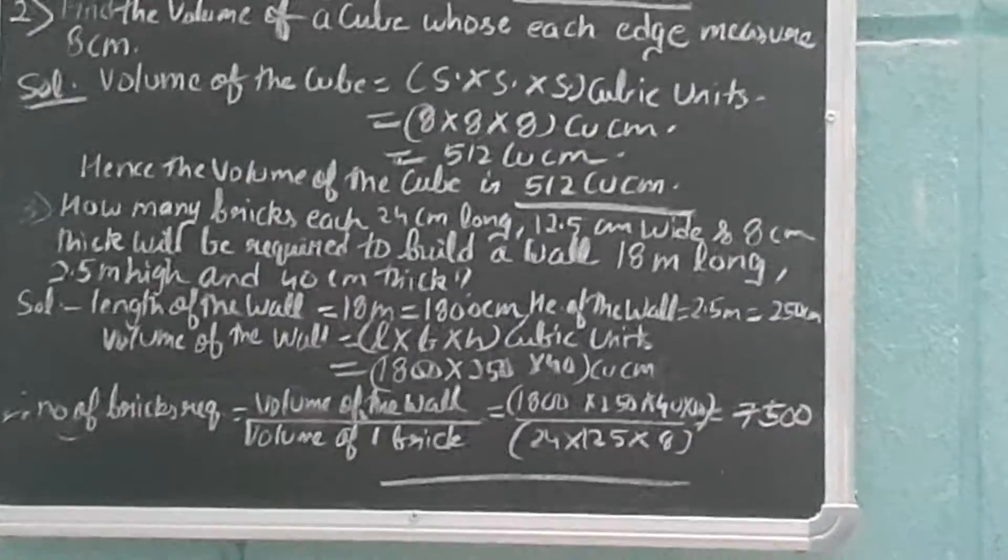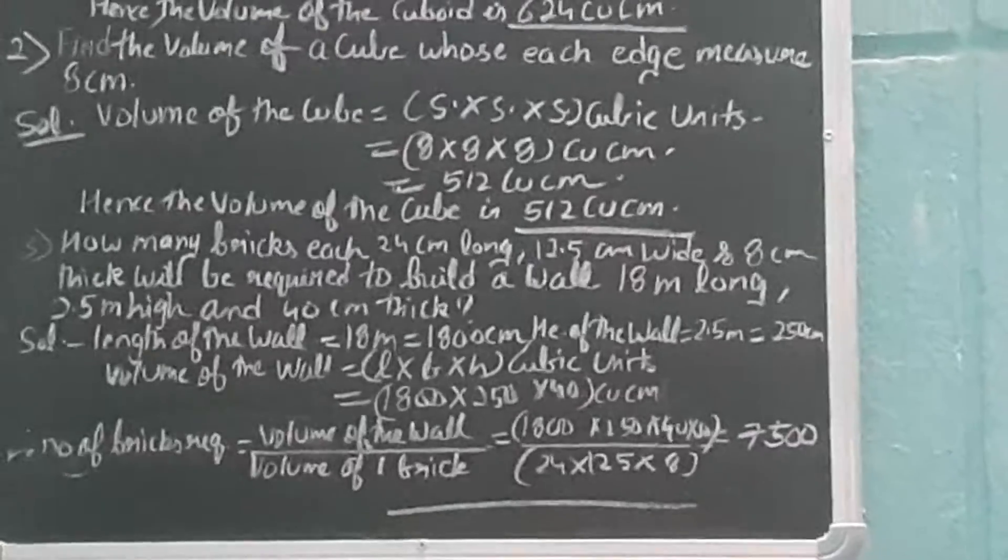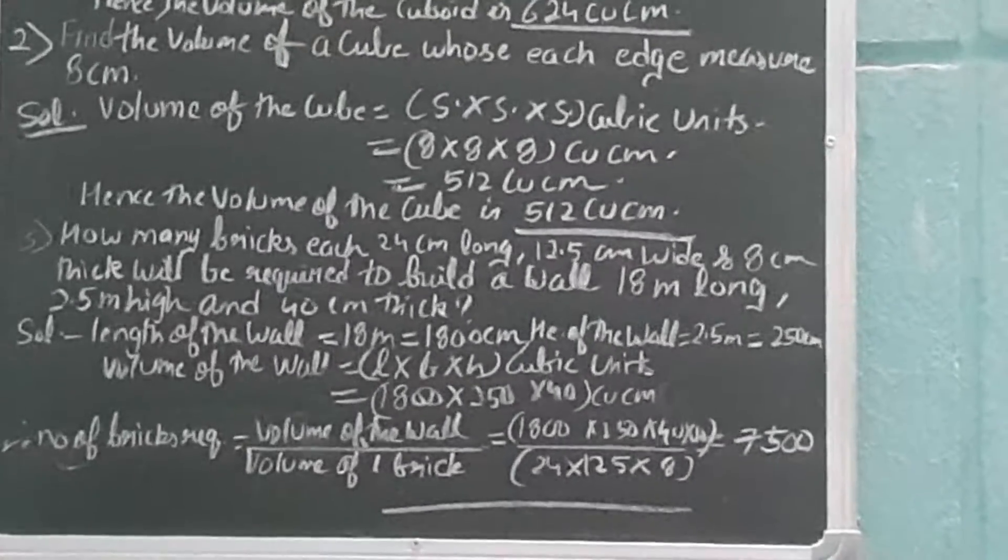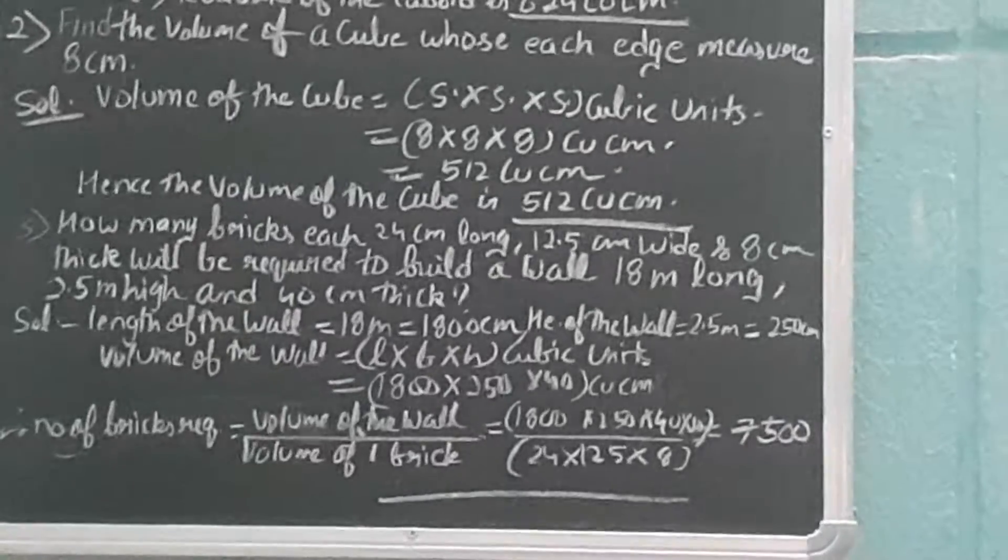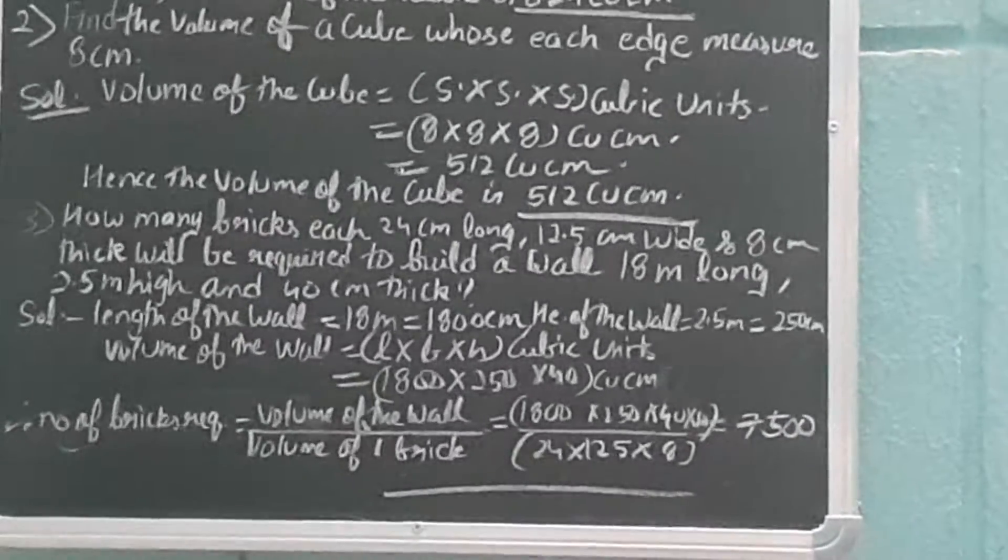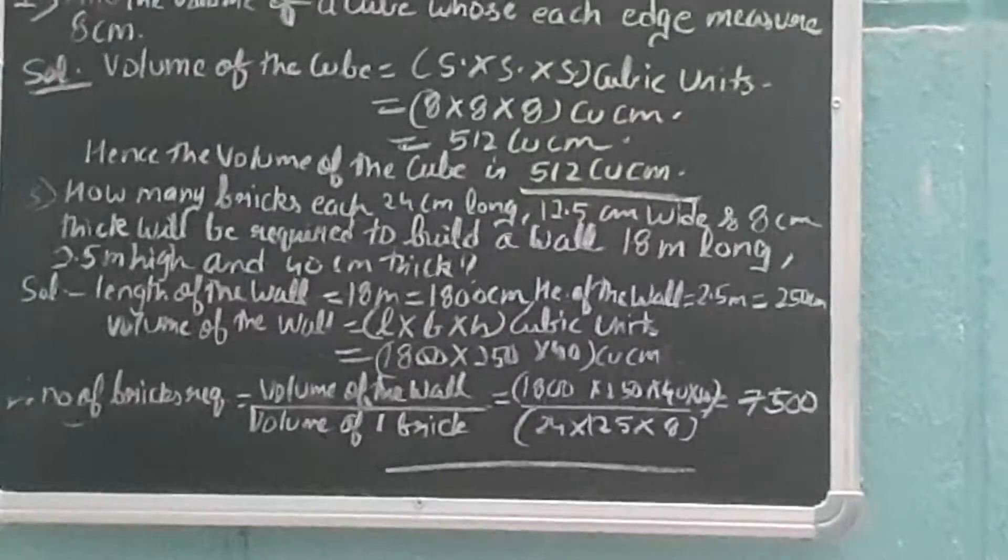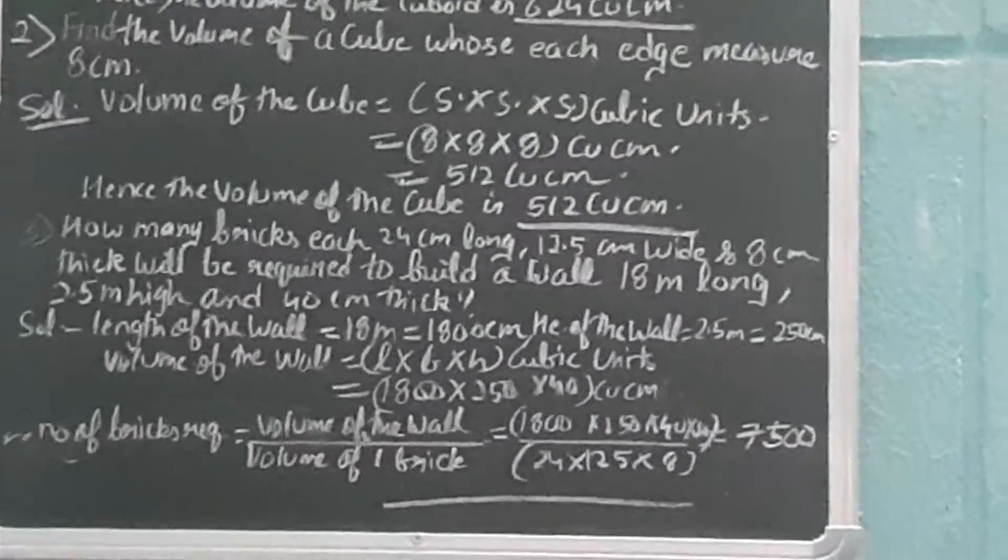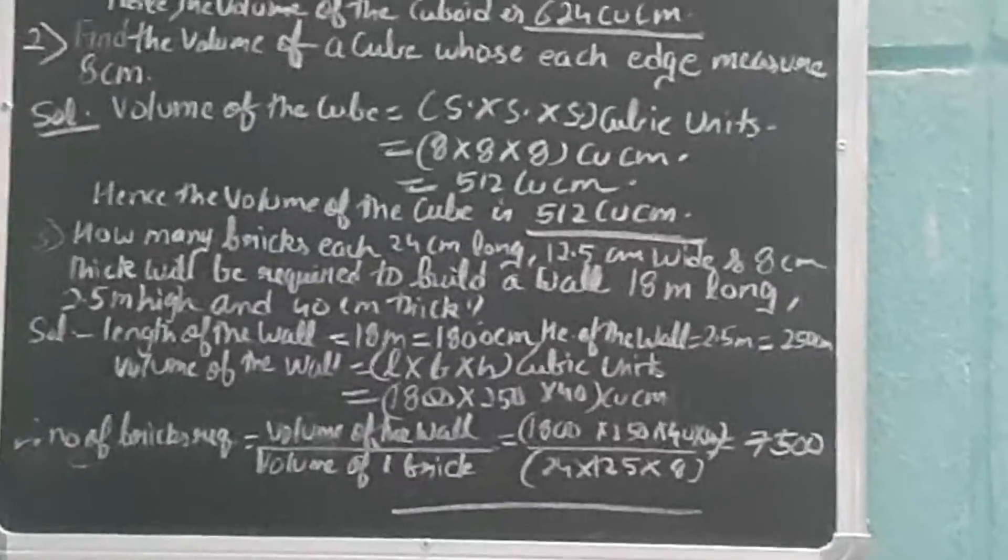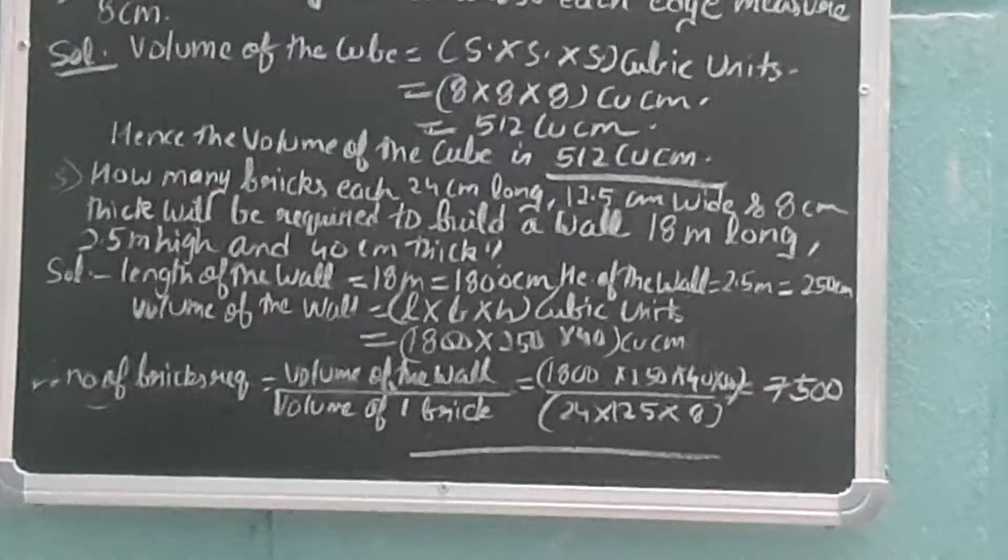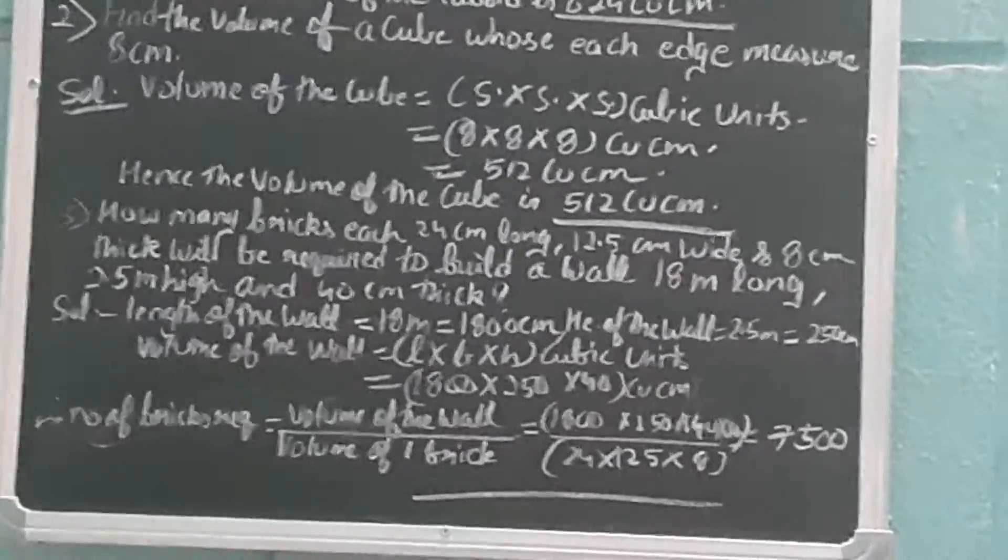Then what will be the volume of the wall? Volume—we know the formula: length times breadth times height cubic units. So in place of length we'll write 1800, then comes breadth which is 250, and height will be 40 cubic centimeters. So we'll convert all the units into centimeter because the unit should be the same.